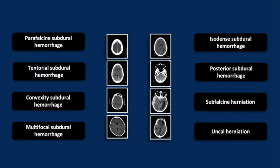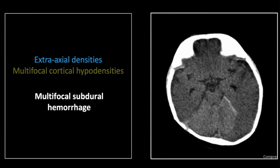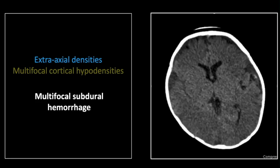Our next case is a rather tragic abuse case with multifocal subdural hemorrhage. Essentially, this infant has manifested subdural hemorrhage wherever it is possible to do so. There is asymmetric left tentorial thickening and density consistent with subdural hemorrhage. Overlying the convexity, note the mix of densities — there is hyperdense fluid overlying the convexities in a much larger distribution than that small focus of hyperdensity, suggesting a more acute hemorrhage. These combined findings suggest multiple injuries throughout time.